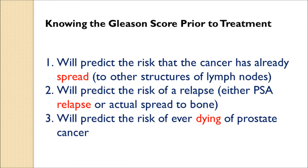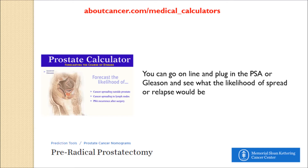What else can you learn from the Gleason score? It predicts the odds that the cancer has already spread to other structures, the odds or probability of a relapse, and the risk of the patient ever dying of prostate cancer — all of these obviously very important.